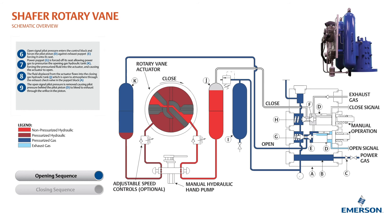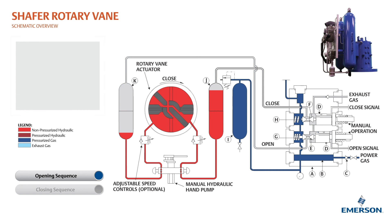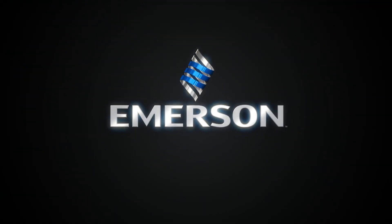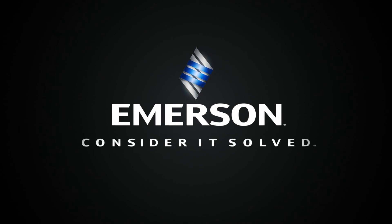The open signal pilot pressure is removed, causing pilot pressure behind the pilot piston to bleed to exhaust through the orifice in the piston. Power pressure and spring tension reseat the power poppet and simultaneously unseat the exhaust poppet, allowing the gas hydraulic tank and operator to neutralize.